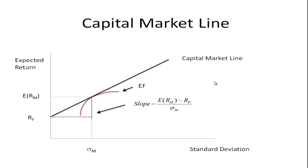The capital market line is a straight line, so it has a constant slope. The slope is the rise over the run: the rise is the expected return of the market minus the risk-free rate, over the run, which goes from the standard deviation of the market to zero. So the slope is (E[R_M] − R_f) / σ_M. We sometimes refer to that as the market price of risk — it tells us how much extra expected return we need to take on an additional unit of risk.